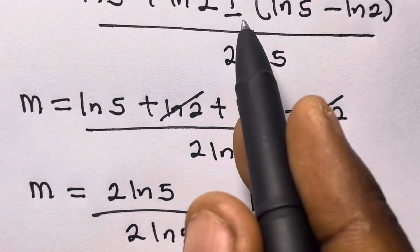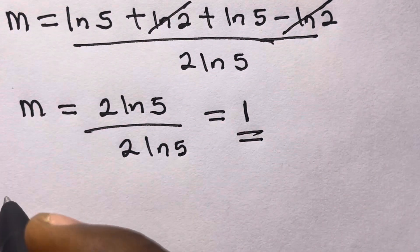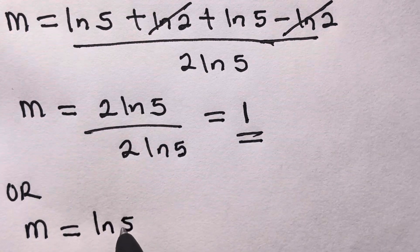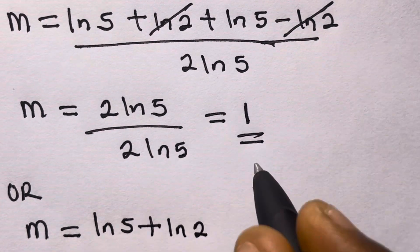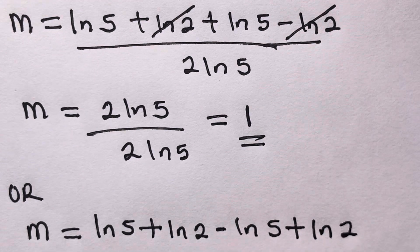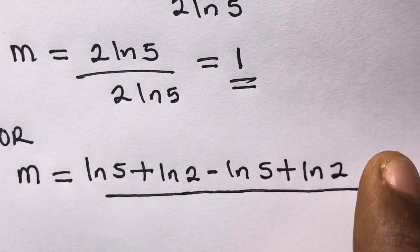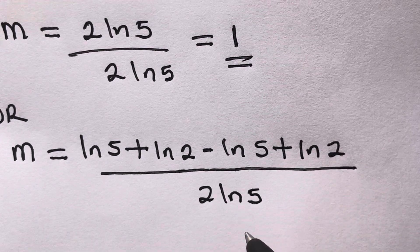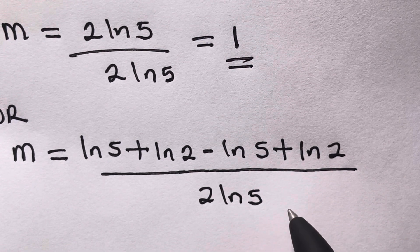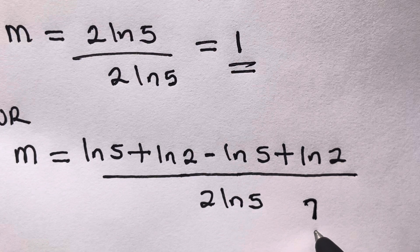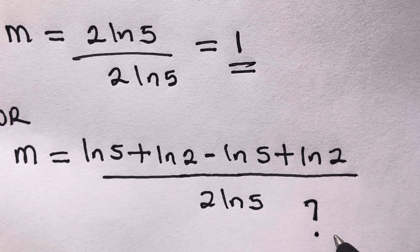For the second solution, we use the minus case: ln5 + ln2 minus (ln5 − ln2), which gives 2·ln2 divided by 2·ln5. I want everyone to simplify this and drop your answer in the comment section. Thank you guys, I hope you enjoyed this video. Please like, leave a comment, share with your friends, and subscribe to my channel. Bye!